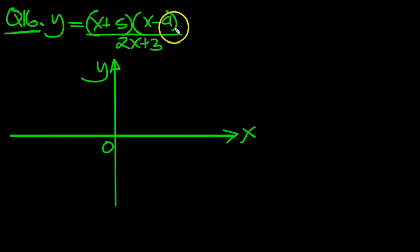y equals bracket x plus 5 times bracket x minus 4 all over 2x plus 3. Let's expand the top so we get x squared, first term. And then it's plus 5x minus 4x, which is plus x. And then 5 times minus 4 is minus 20, over the 2x plus 3.